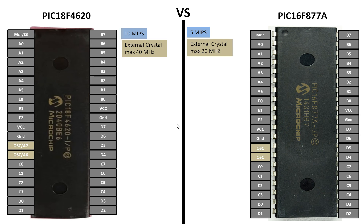The next thing is the external crystal oscillator. You connect the external crystal oscillator on both microcontrollers at pin number 13 and 14. The maximum crystal you can connect on the PIC16F877A is 20 MHz, while on the PIC18F4620 it is 40 MHz. So the PIC18F4620 allows you to connect a greater crystal and acquire greater speed.